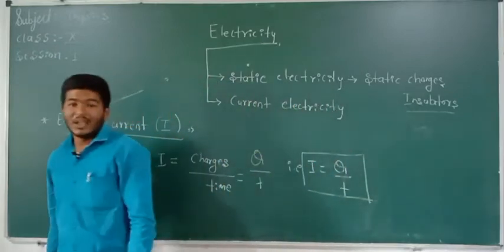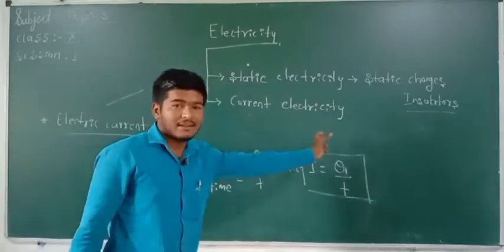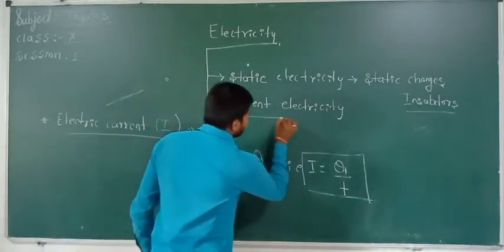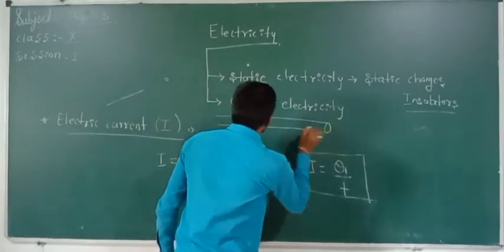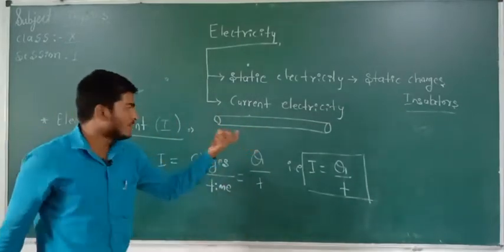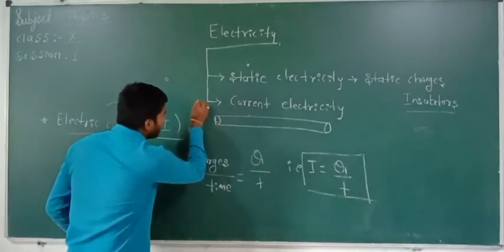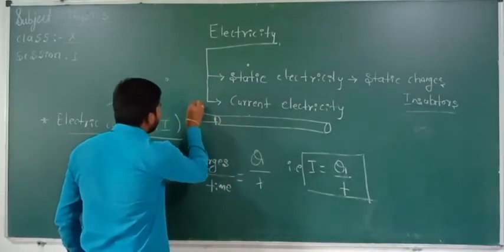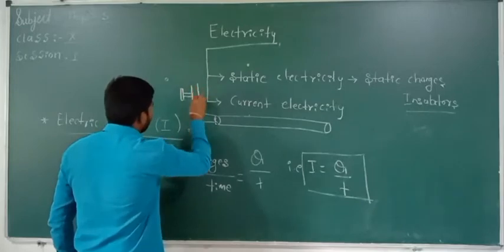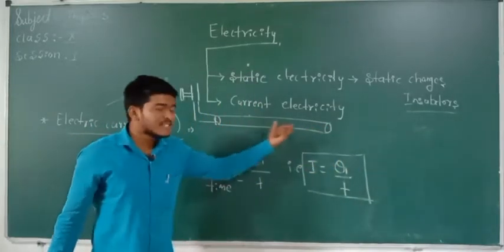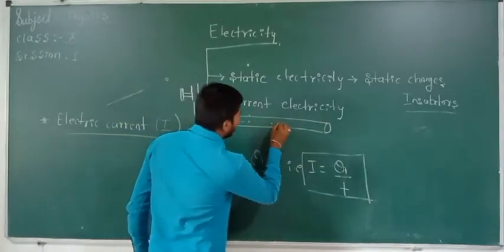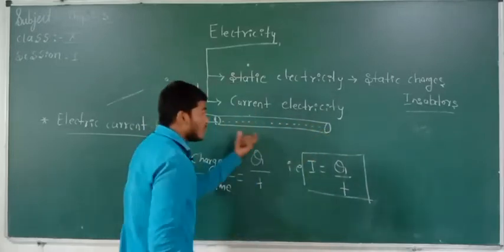A question arises: how do the charges flow through a conductor? Imagine a transparent plastic pipe with a water supply. Can we see the flow of water through the transparent pipe? Yes, we can see the flow of water drops or water molecules through the pipe.